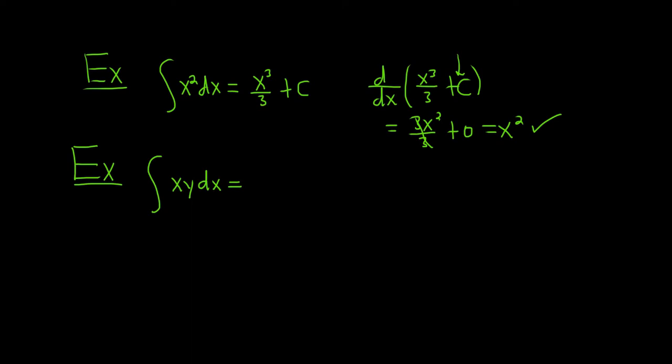So we integrate the x, there is a 1 here, so we simply get x squared, the y hangs out, and we divide by 2. But then we're not just adding a constant, we're adding a constant function. So we add a function of the other variable. So when you integrate with respect to x, you're supposed to add an unknown function of the other variable.